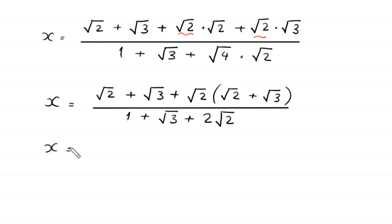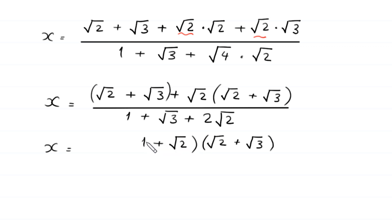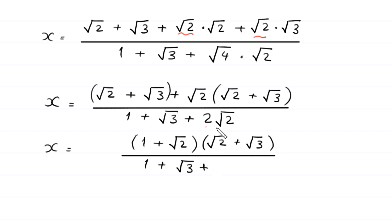Next, x is equal to: now from here we can factor out square root of 2 plus square root of 3 as a common factor, leaving in brackets 1 plus square root of 2, divided by 1 plus square root of 3 plus this 2 times square root of 2. Now 2 times square root of 2 can be written as square root of 2 plus square root of 2, so we write this 2 times square root of 2 as square root of 2 plus square root of 2.